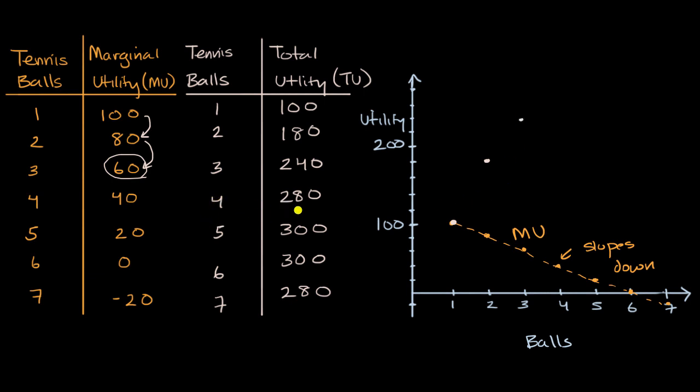Now the fourth ball, once again, I'm just going to take 240 and add the incremental utility of that fourth ball, the marginal utility of that fourth ball, that gets me to 280. So that gets me to 280, which is right over, let's see, right over there.